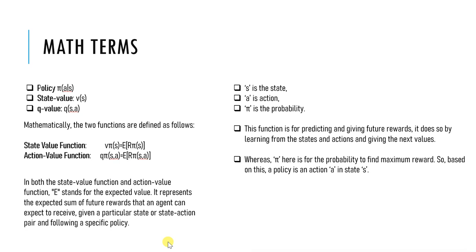The action value function Q(s,a) is a function that estimates the expected long-term return, also called cumulative reward, starting from a given state s, taking a specific action a, and then following a specific policy π. It is the expected sum of future rewards discounted by the discount factor that the agent can expect to receive from that state-action pair.